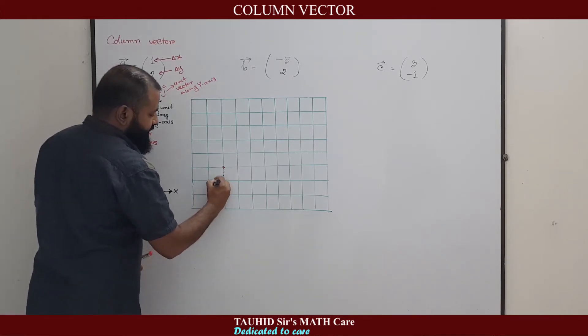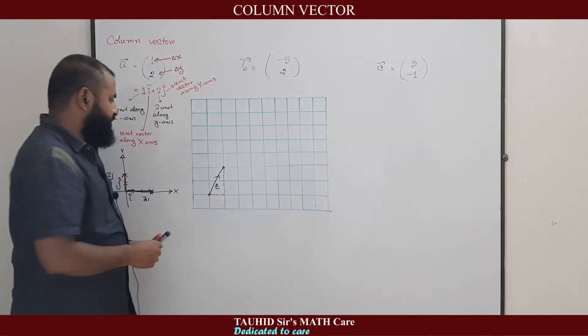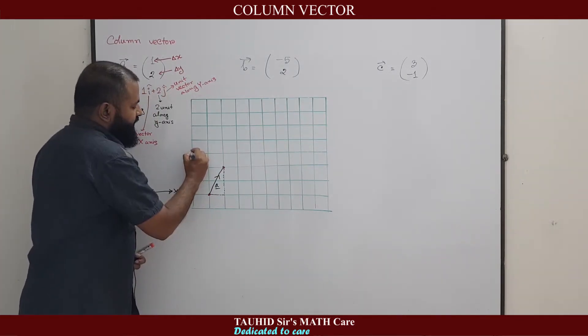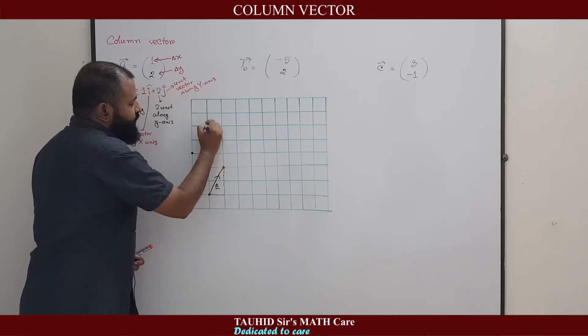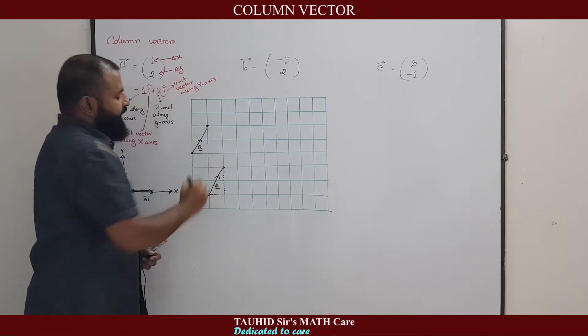That means this is our a vector. We can start from any point. We could have started from here: one unit to x-axis, two units to y-axis. We could have drawn a like that.